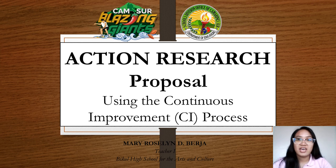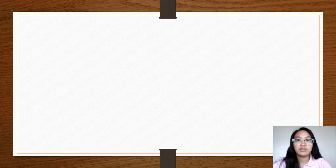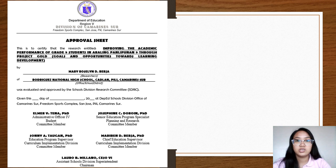The Action Research Proposal using the Continuous Improvement Process. For the first and second pages of the proposal, we have the approval sheet which includes project title, researcher's data, your data, five signatories, or the Division Research Committee.